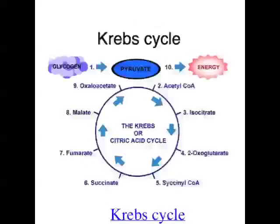The second stage of aerobic respiration is called the Krebs cycle. The reactions of the Krebs cycle occur in the inner compartment of mitochondria. For each molecule of pyruvate that passes through this cycle, three molecules of carbon dioxide are formed, and the Krebs cycle also generates two molecules of ATP.